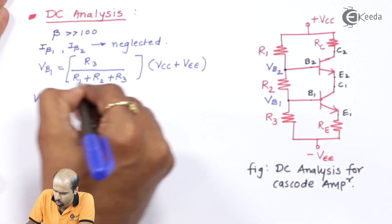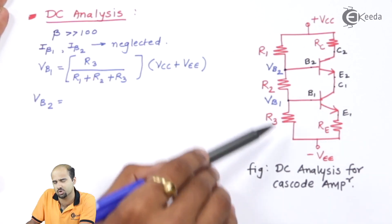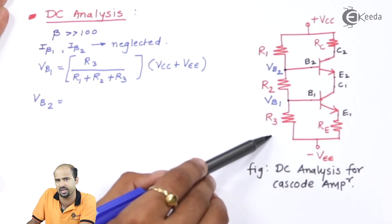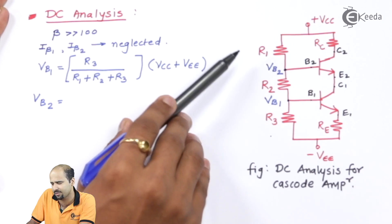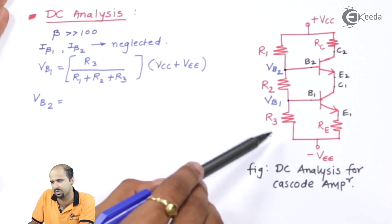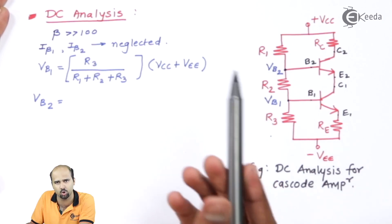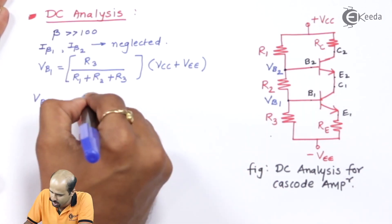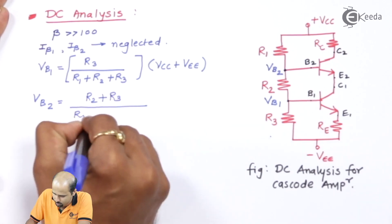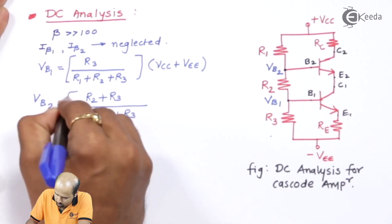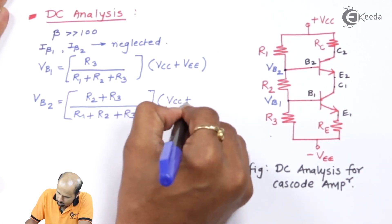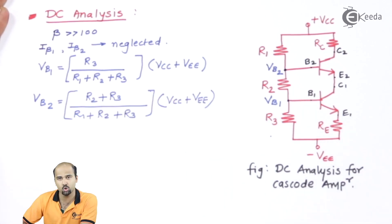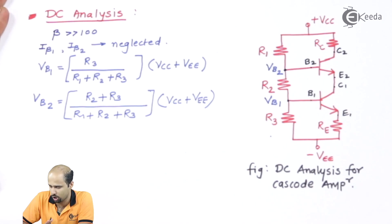Similarly, VB2 is equal to the summation of R2 plus R3, divided by R1 plus R2 plus R3, multiplied by the total voltage VCC plus VEE. These two voltage values have now been obtained.